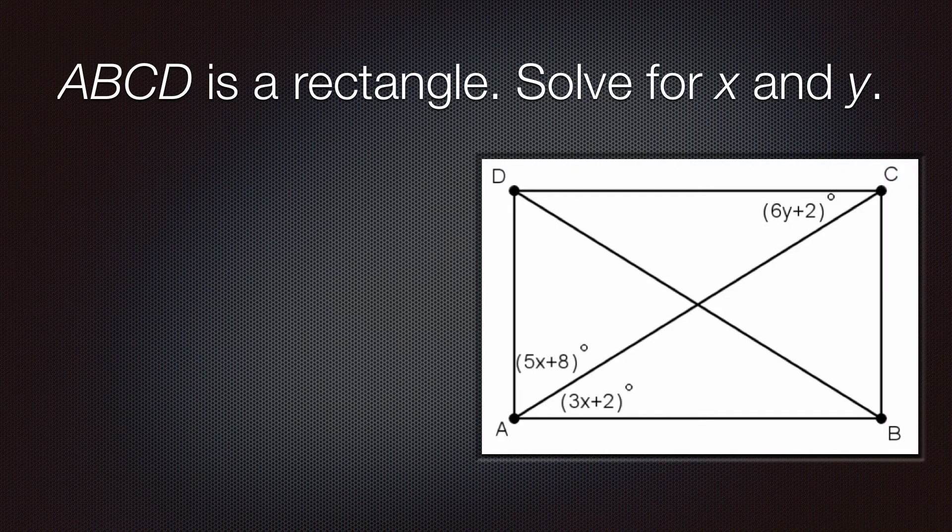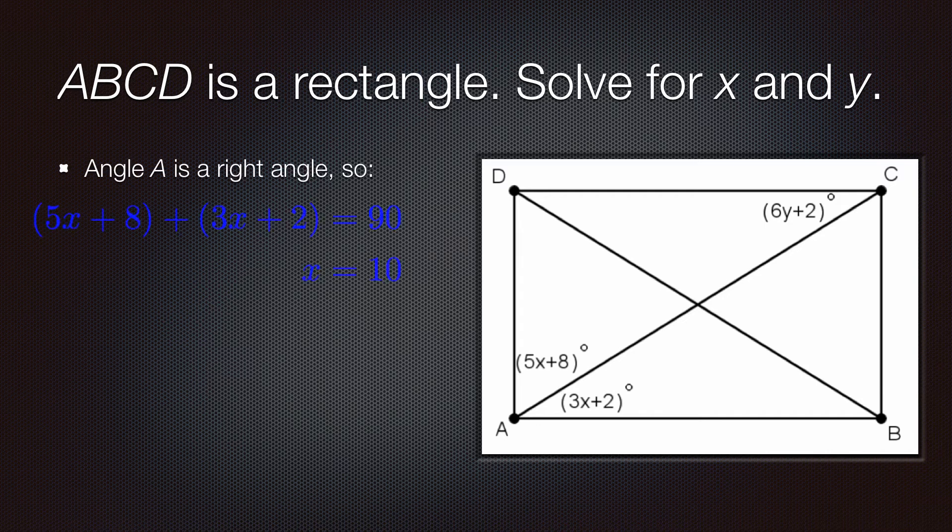Let's say ABCD here is a rectangle, and we want to solve for x and y. Well, first, angle A is a right angle. And so, we would say 5x plus 8 plus 3x plus 2 must equal 90, and solving that for x gives us that x equals 10.